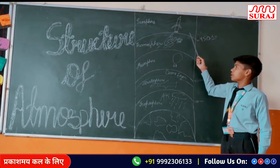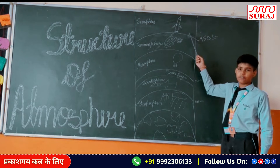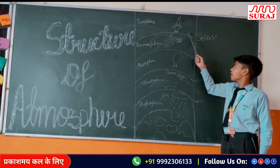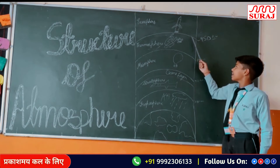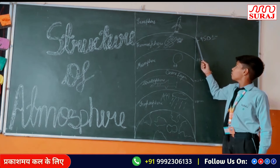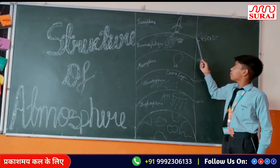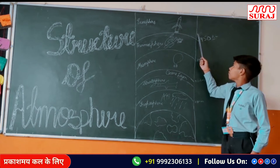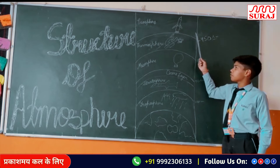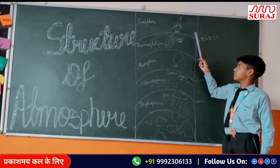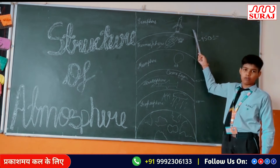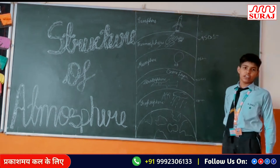Exosphere is the layer where rockets fly, about 45 km above from the earth's surface. It is fully part of outer space. Thank you everyone.